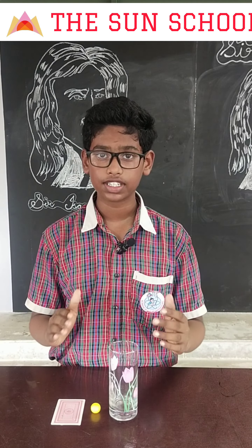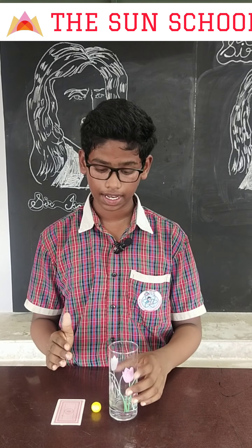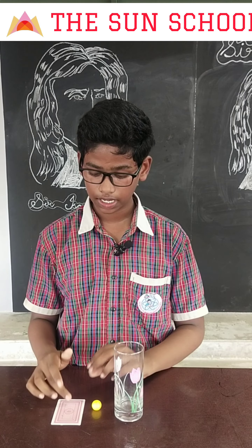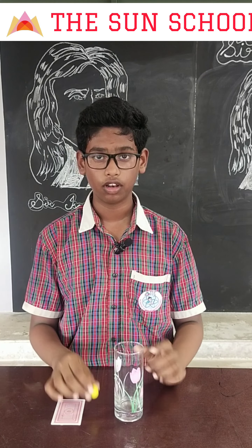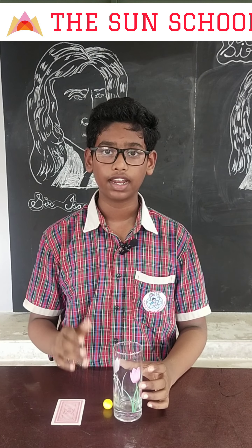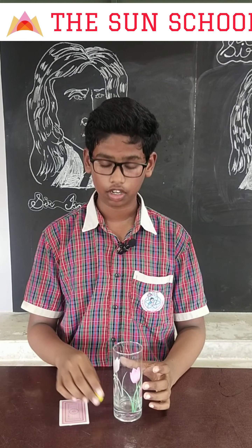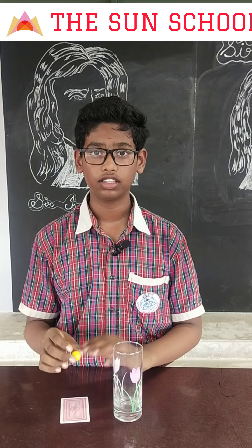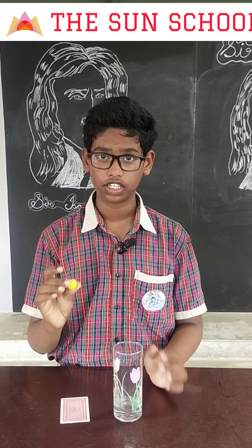First law of motion. For this experiment we need a glass tumbler, a lid, and a small ball. Let me place the lid on the glass and the ball at the center of the lid. The ball should be stationary.